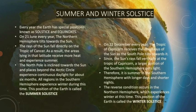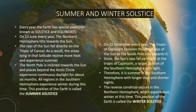Since the Sun's rays fall vertically at the Tropic of Capricorn, a larger portion of the southern hemisphere gets light. Therefore, it is summer in the southern hemisphere with longer days and shorter nights. The reverse condition occurs in the northern hemisphere, which experiences winter at this time. This particular position is called winter solstice.